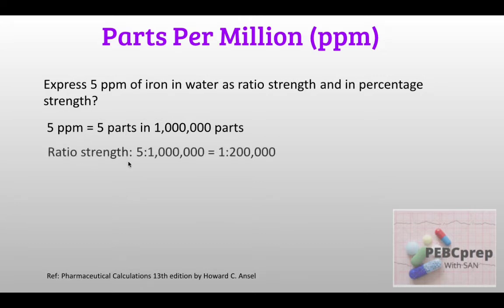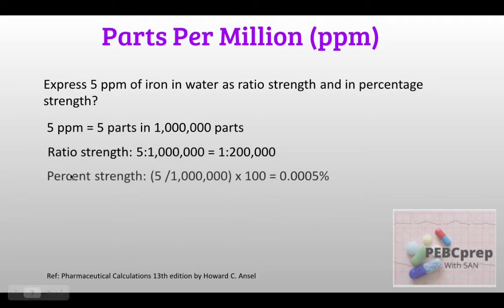For ratio strength, we write 5 is to 1,000,000, which simplifies to 1 is to 200,000 — that's the ratio strength. For percentage strength, we multiply by 100: 5 divided by 1,000,000 multiplied by 100 gives 0.0005 percent.